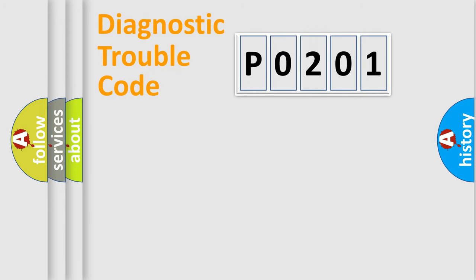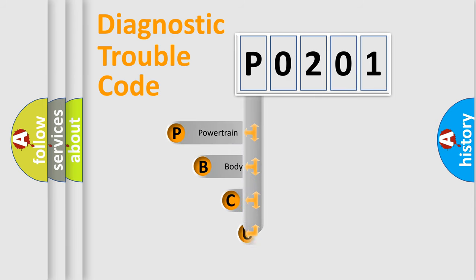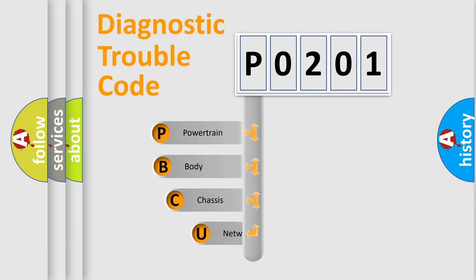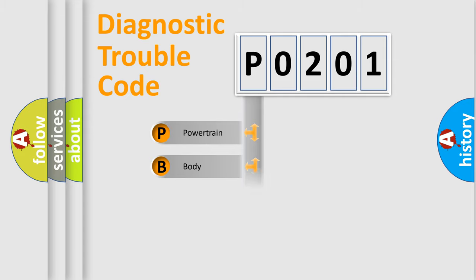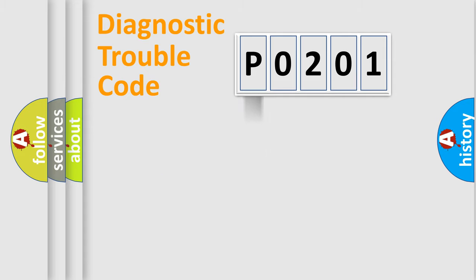Let's do this. First, let's look at the history of diagnostic fault code composition according to the OBD2 protocol, which is unified for all automakers since 2000. We divide the electrical system of the automobile into four basic units: powertrain, body, chassis, and network.